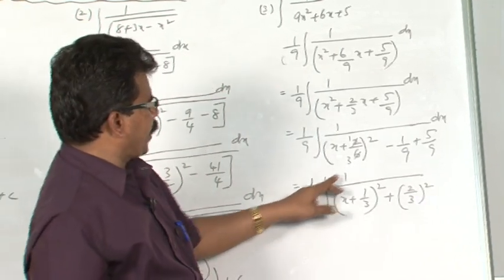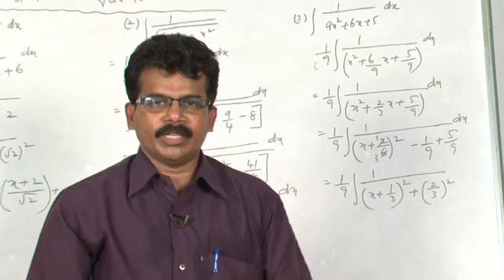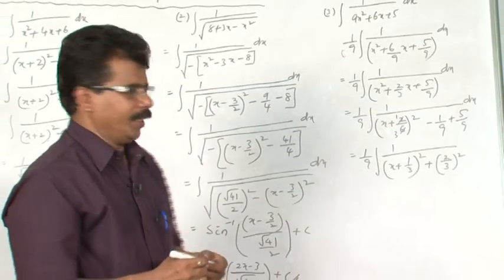This is in the form of integral 1 by x square plus a square. The formula for integral 1 by x square plus a square is 1 by a tan inverse x by a.